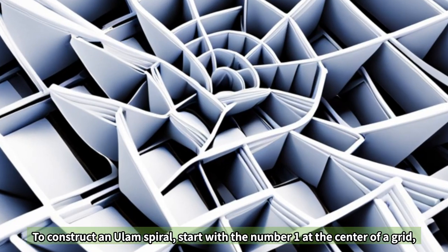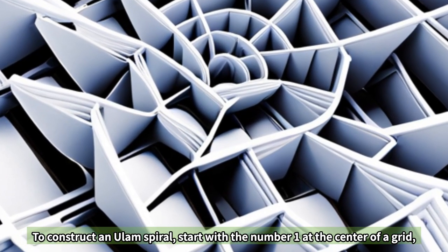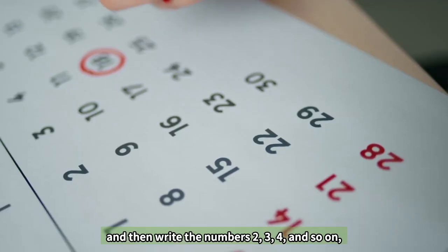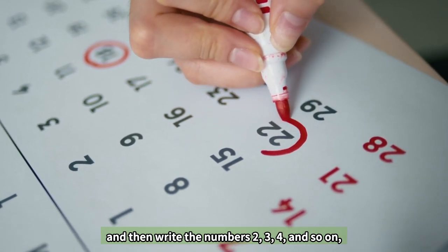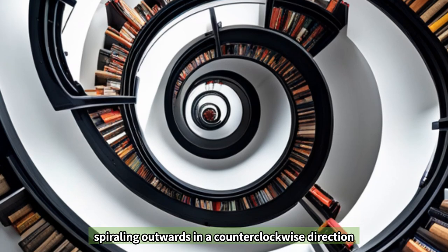To construct an Ulam spiral, start with the number 1 at the center of a grid, and then write the numbers 2, 3, 4, and so on, spiraling outwards in a counterclockwise direction.